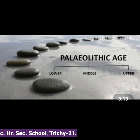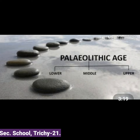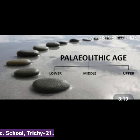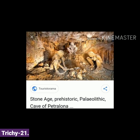Next we discuss the topic of lower paleolithic culture. The paleolithic culture is divided into three cultures: lower paleolithic culture, middle paleolithic culture, and upper paleolithic culture. The lower paleolithic culture is marked by human ancestors belonging to Homo habilis and Homo erectus. These tools were found in Africa, Asia, and Europe.